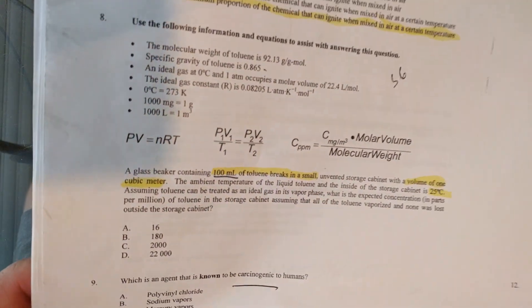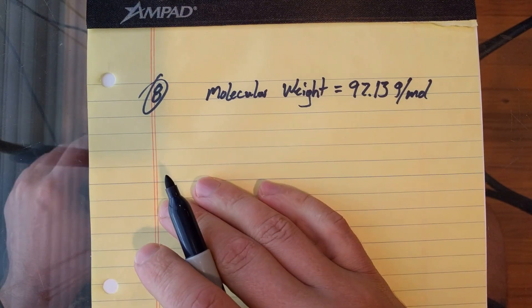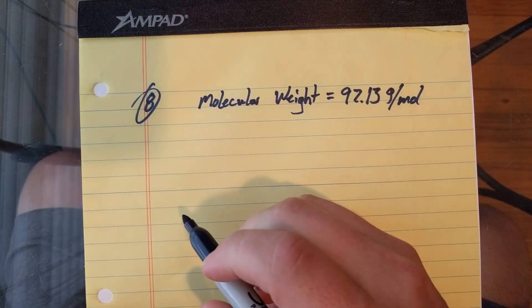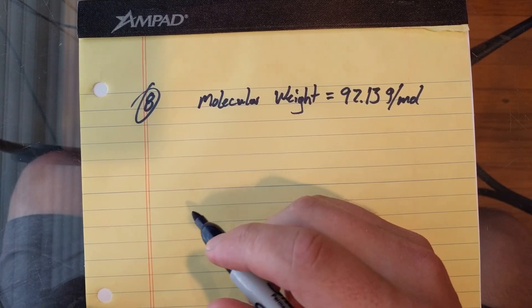So what we got to do is just a couple conversions and then we can use the handy-dandy formula they gave us for concentration in parts per million.